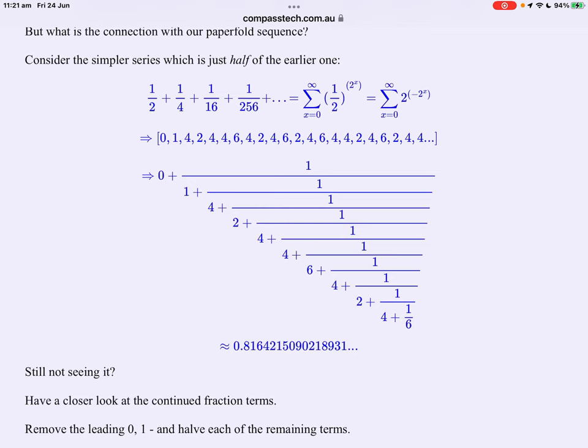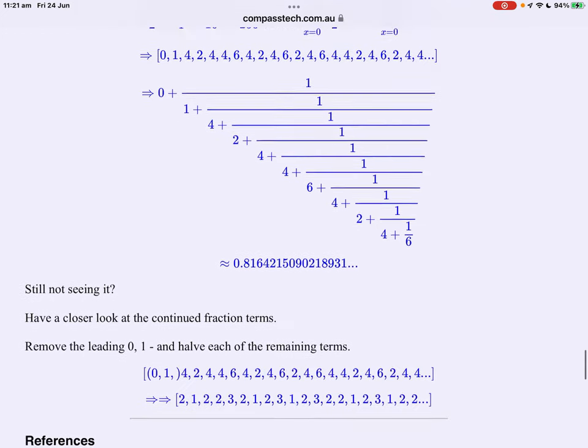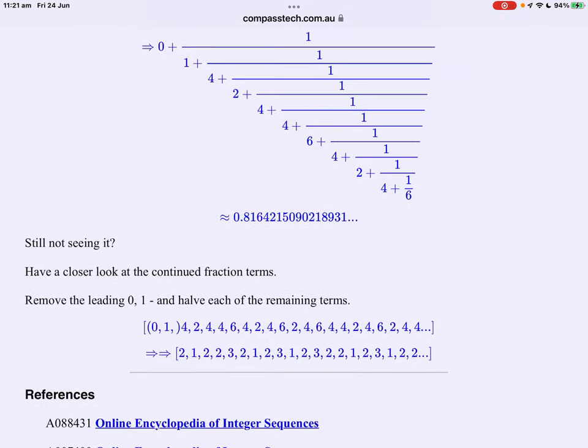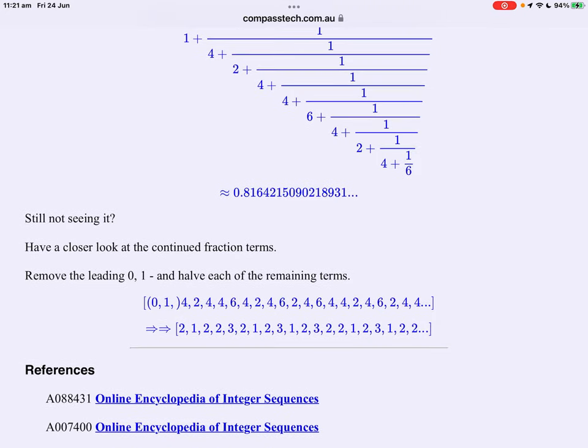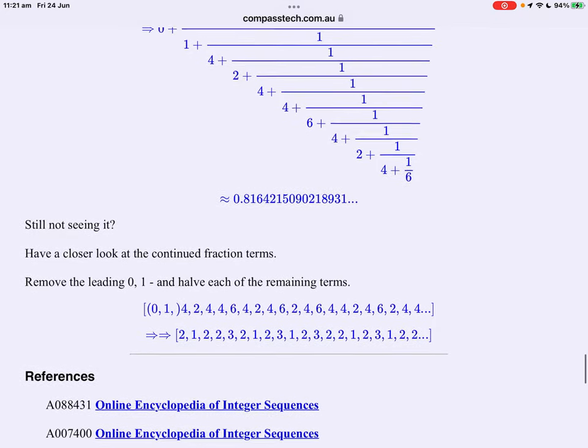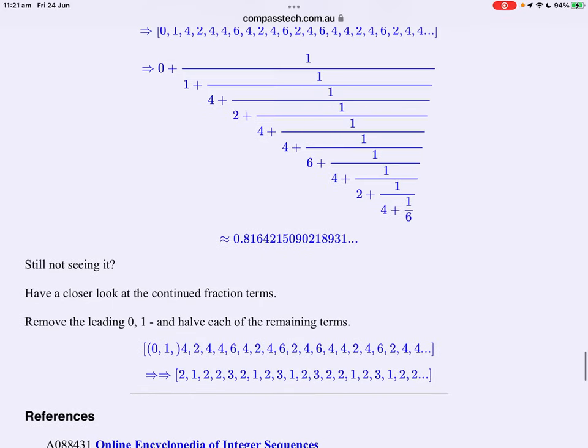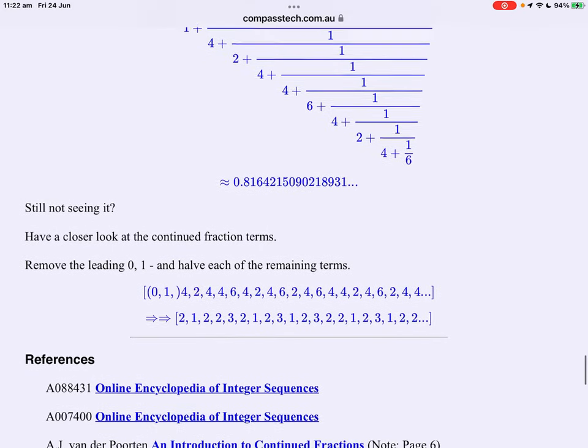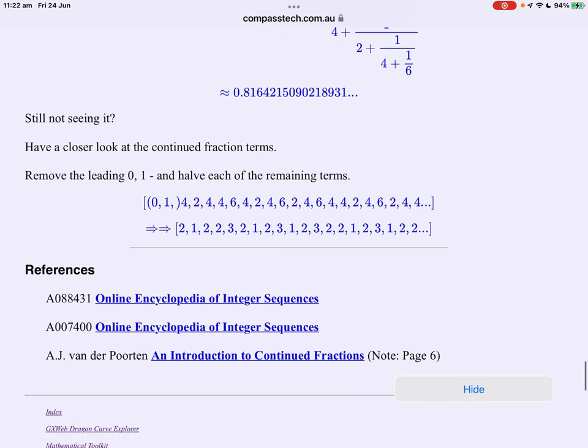It then gives us the continued fraction 0, 1, 4, 2, 4, 4, 6, 4, 2, 4, 6. Well once again it doesn't look periodic and it leads to a value of 0.816. Still not seeing it? Well if you line up the terms of that continued fraction and halve them, we're back to our original form. This is the summed paper fold sequence.